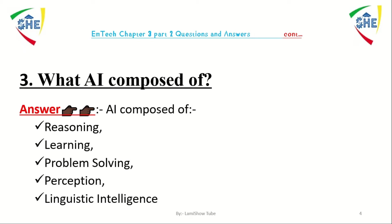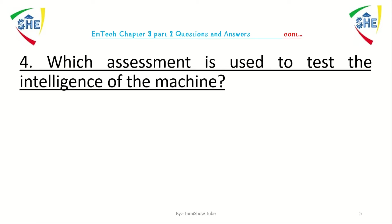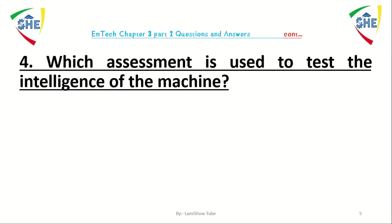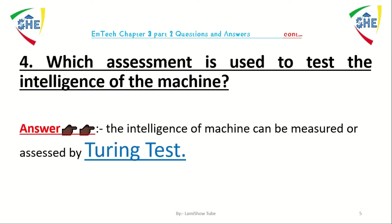Question number four: which tool is used to test the intelligence of a machine or system? The intelligence of a machine or system is measured or assessed by using a Turing test.